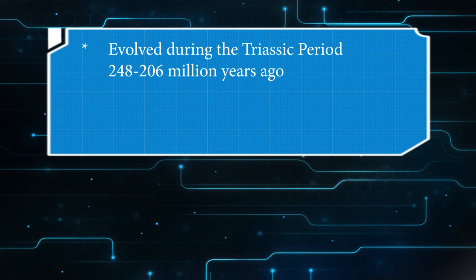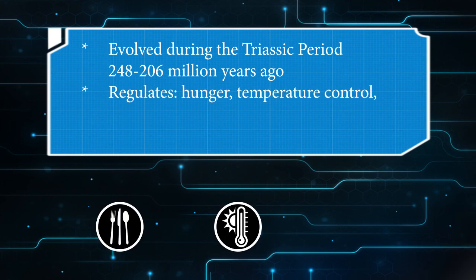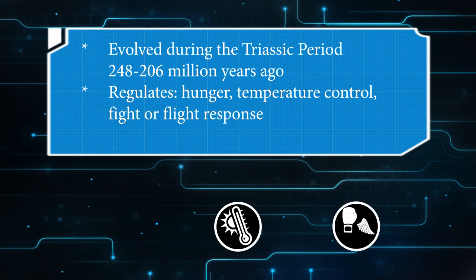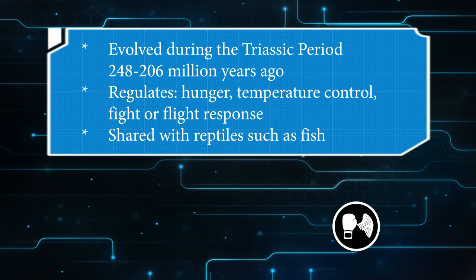The reptilian brain evolved during the Triassic period. It regulates hunger, temperature control, and fight or flight response. We share it with reptiles such as fish.